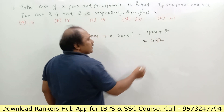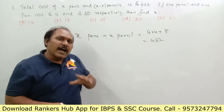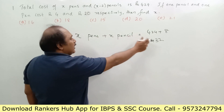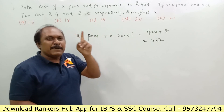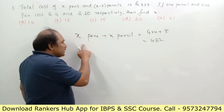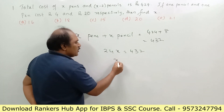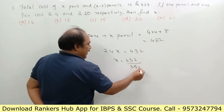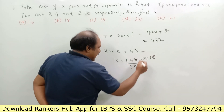I'm writing this on the board for you to understand, but all these calculations should be done in your mind to save time — in competitive exams, how quickly you answer matters. So x pens and x pencils together cost 432. One pencil is 4 rupees, one pen is 20 rupees, so one pen and one pencil together cost 24 rupees. Therefore 24 into x equals 432, giving x equals 432 divided by 24.